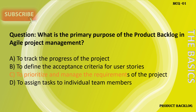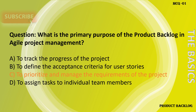The answer is C: to prioritize and manage the requirements of the project. The Product Backlog is a prioritized list of requirements, features, and user stories that represent the work to be done. Its primary purpose is to prioritize and manage project requirements, ensuring that the most valuable items are given high priority and delivered early.